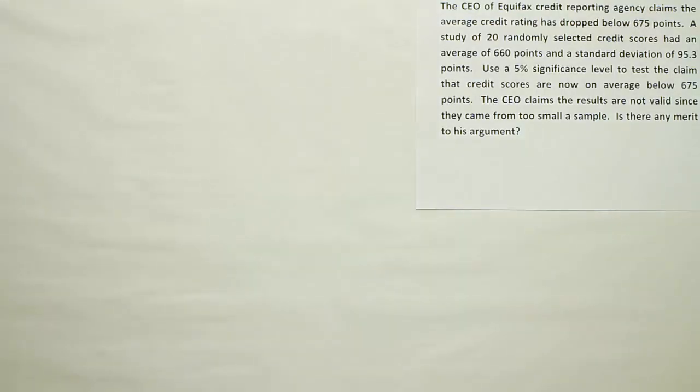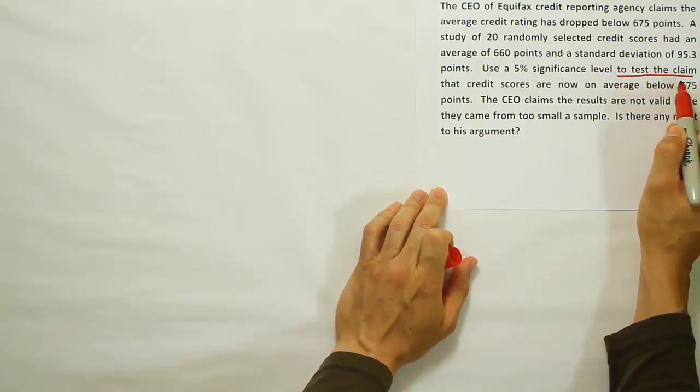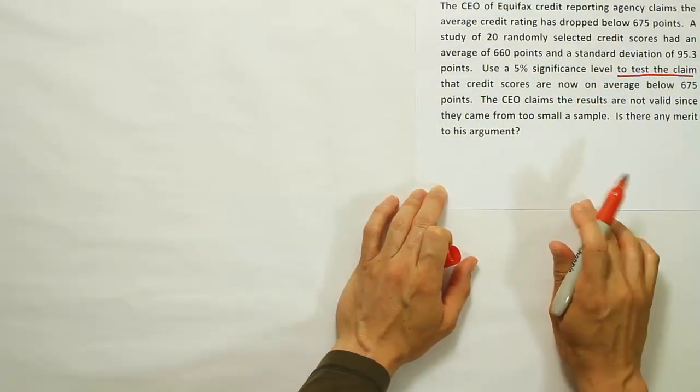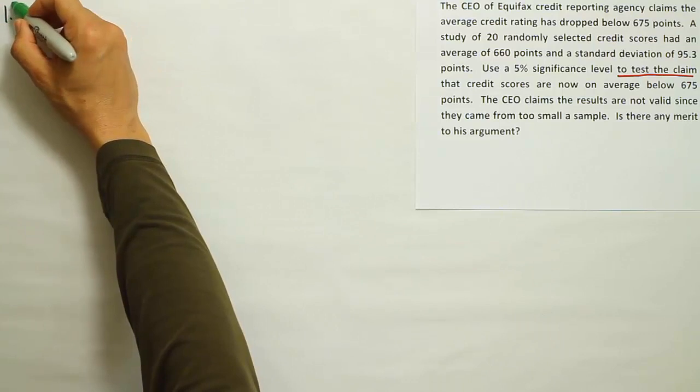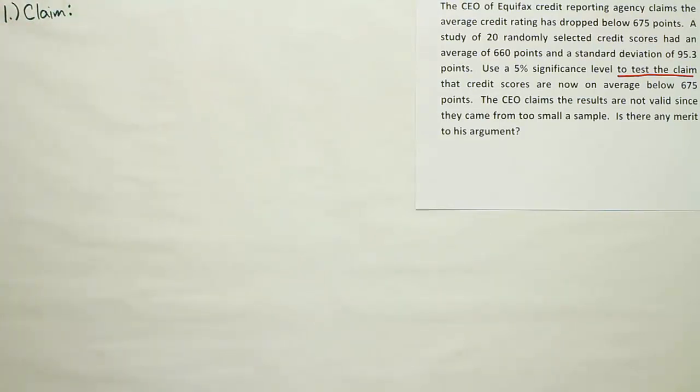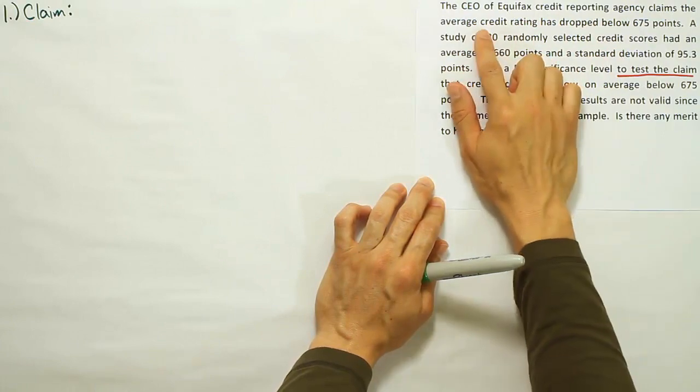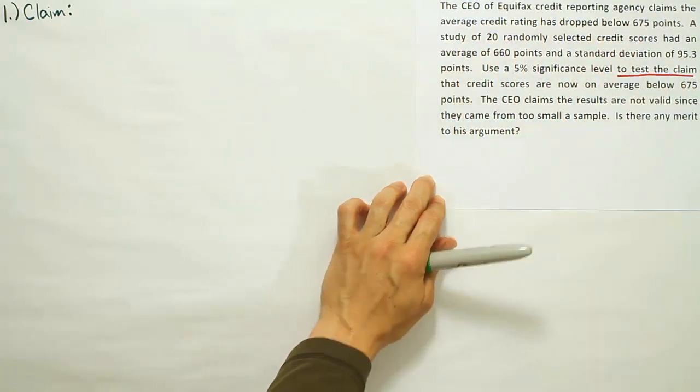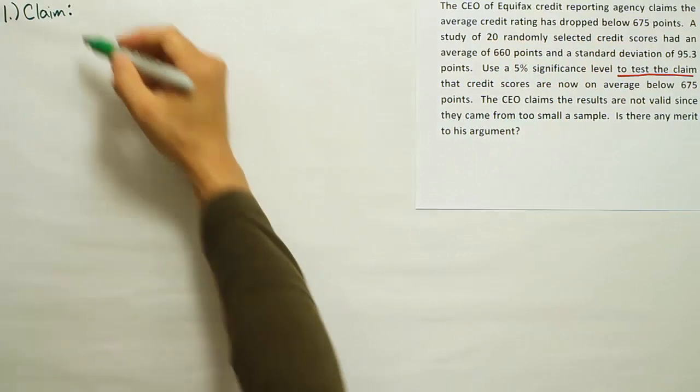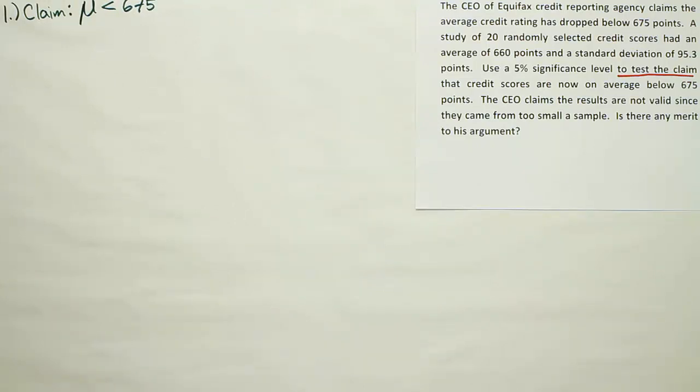Okay, so first thing you want to do, as always, is to identify what keywords are present. It says to test the claim, so use a 5% significance level to test the claim so we can tell we're doing a hypothesis test. First step then is to identify that claim. So the CEO of Equifax claims the average credit rating has dropped below 675. So he's saying that the average credit rating, mu, is less than 675 points. That's his claim.